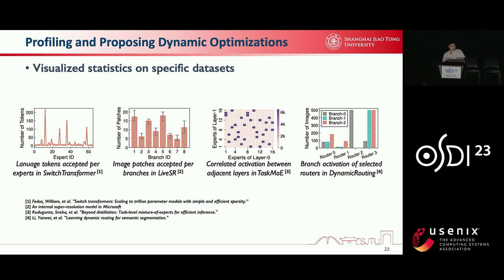Now, we will use Brainstorm to profile dynamic neural networks and optimize them. Here, we present the statistics of four common dynamic models collected by running the models on specific datasets. The Switch Transformer and Task MOE are two MOE-based dynamic models. Live SR is a dynamic super-resolution model. Dynamic Routing is a dynamic neural network for computer vision. I will now talk about several optimizations proposed by Brainstorm one by one. All optimization strategies are enabled by Brainstorm according to these runtime profiles.